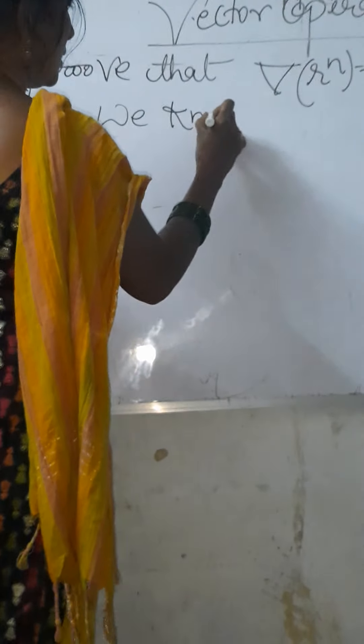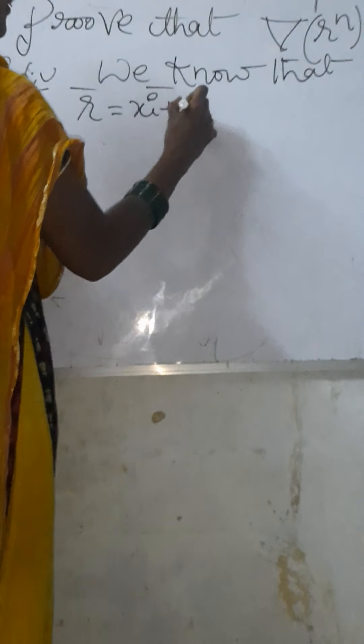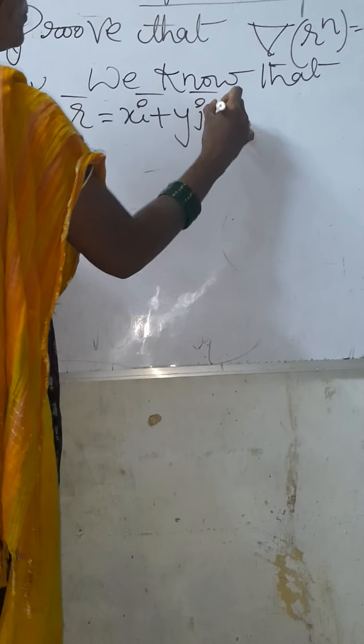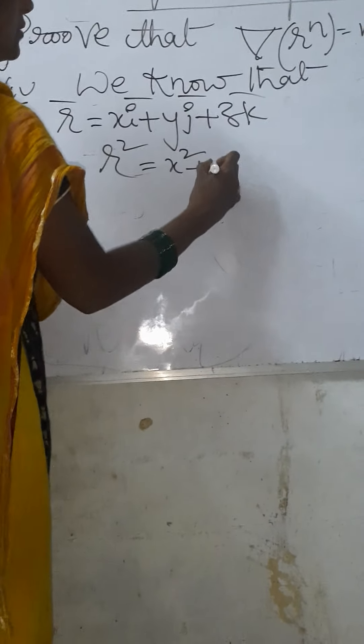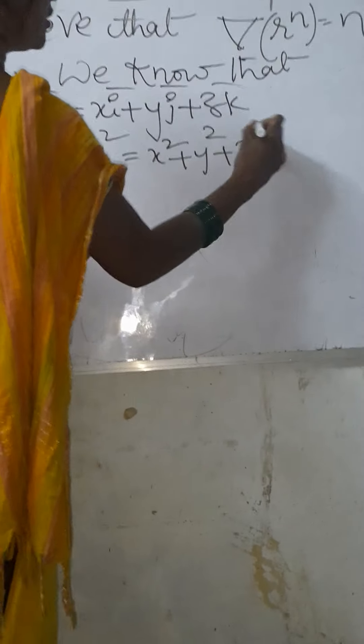That is, delta of r power n equals to n into r power n minus 2 into r. We know that here, r equals to xi bar plus yj bar plus zk bar. And r square equals to x square plus y square plus z square.